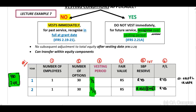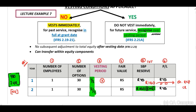Now let's look at a scenario where there is no vesting condition. With no vesting condition, the shares vest immediately, so the vesting period is nothing. The share-based payment reserve will be R150, and the journal entry at the end of year one is to debit the expense and credit the share-based payment reserve for the full R150 immediately.